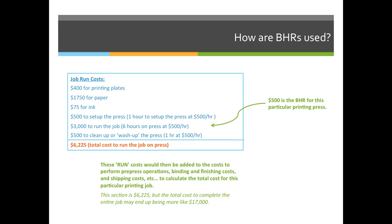The next three costs are hourly-rate-based. It costs $500 to set up the press — setup is one hour, and the budgeted hourly rate for this particular printing press is $500 per hour. The run time — how long the sheets will be printed — is six hours, so multiplying that by $500 gives us $3,000. Last wash-up is one hour, which is another $500 because we charge $500 per hour to run our printing press.